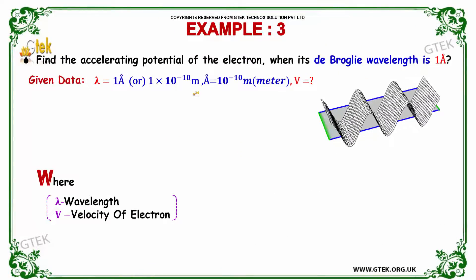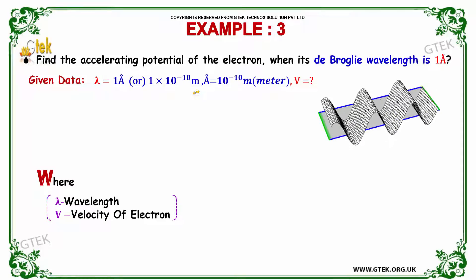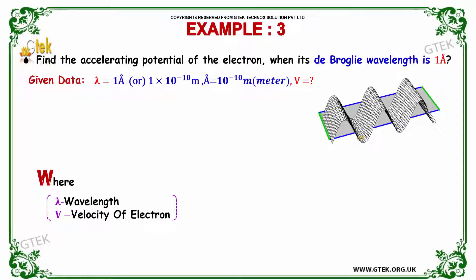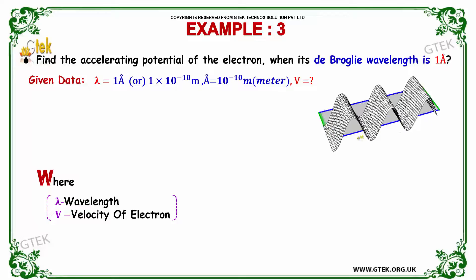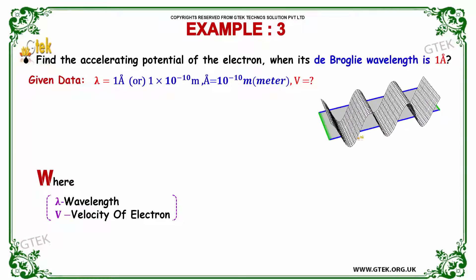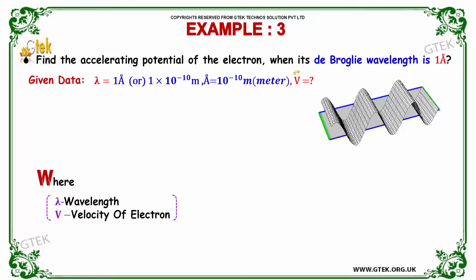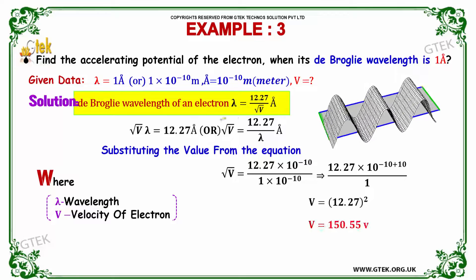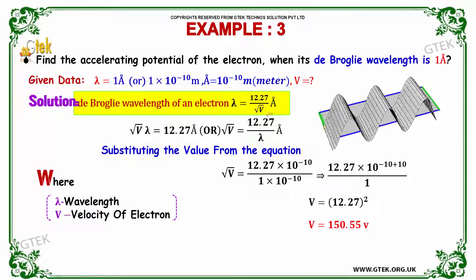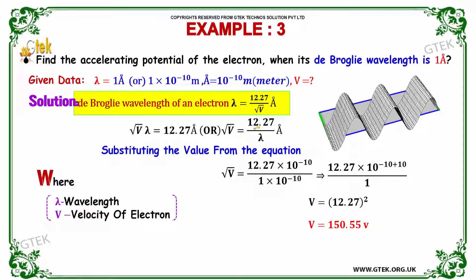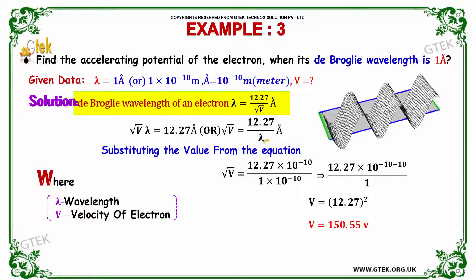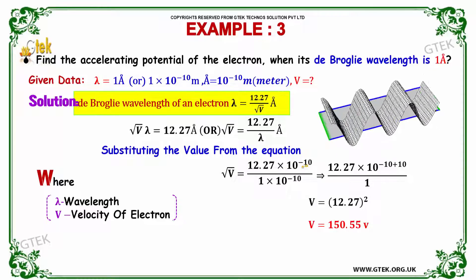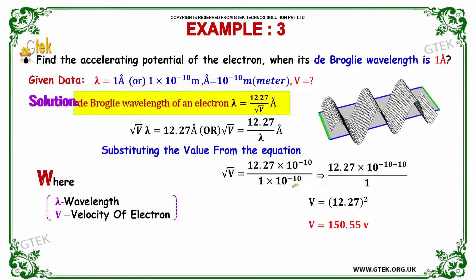Find the accelerating potential of the electron when its de Broglie wavelength is 1 Ångström. So λ = 1 Å = 1 × 10⁻¹⁰ meter, and we need to find V, the potential. The de Broglie wavelength of an electron is λ = 12.27 / √V Ångström. So √V = 12.27 / λ = 12.27 × 10⁻¹⁰ divided by 1 × 10⁻¹⁰.